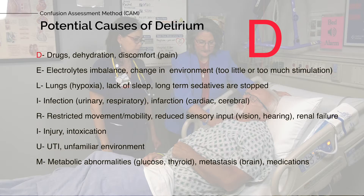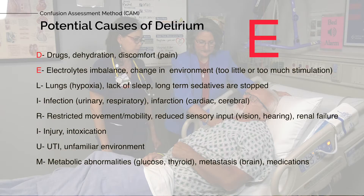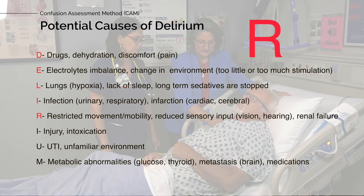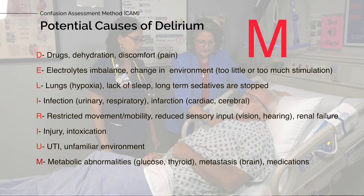D is for drugs, dehydration, discomfort, and pain. E is for electrolyte imbalance, changing the environment, too little or too much stimulation. L is for lungs, hypoxia, lax sleep, and long-term sedatives that are stopped. I is for infection and infarction. R is for restricted mobility and movement, reduced sensory input — vision, hearing — and renal failure. I is for injury and intoxication. U is for unfamiliar environment. M is for metabolic abnormalities — glucose, thyroid, and medications.